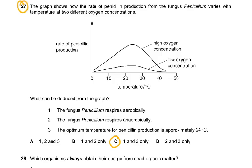Question 27: The graph shows how the rate of penicillin production from the fungus Penicillium varies with temperature at two different oxygen concentrations — high and low. There was no graph for no oxygen, so anaerobic respiration is incorrect. Only statements one and three were correct, so the answer was C.